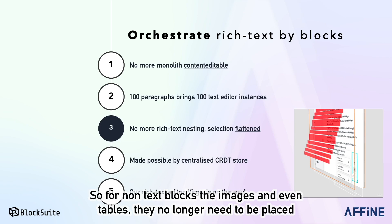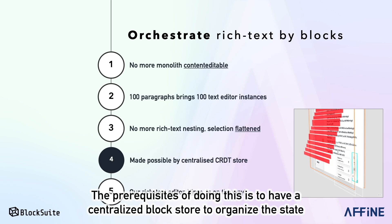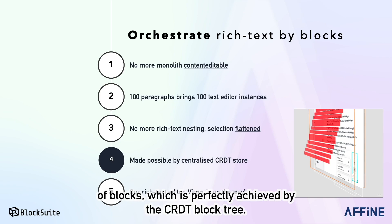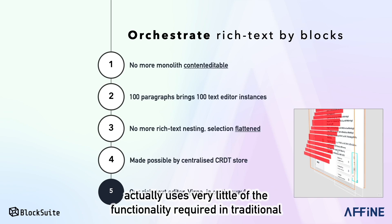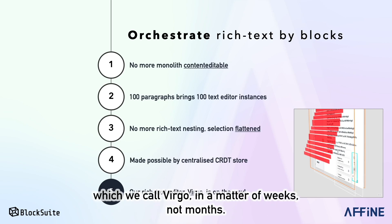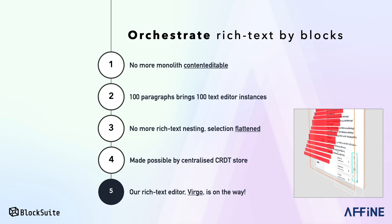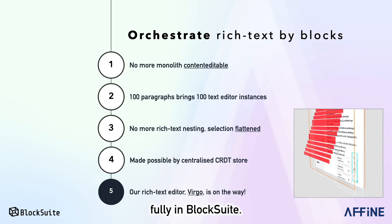So there are a hundred separate and controllable content-editables that only handle text. For non-text blocks like images and even tables, they no longer need to be placed inside content-editable anymore. The prerequisite of doing this is to have a centralized block store to organize the state of blocks, which is perfectly achieved by the CRDT block tree. Finally, based on this simplified architecture, the editor in each text block uses very little of the functionality required in traditional rich text editors. This allows us to independently implement our own text editor, which we call Virgo, in a matter of weeks, not months. In the future, we will continue to refine this editor and switch to using it fully in BlockSuite.